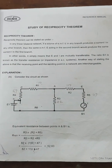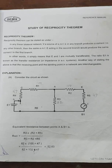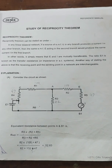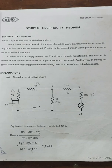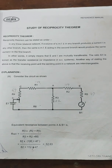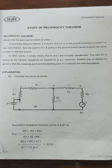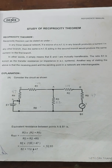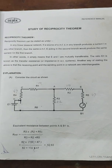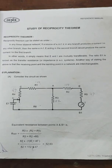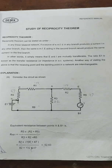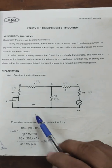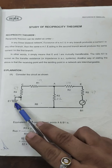As per the definition of the reciprocity theorem: in any linear bilateral network, if a source of EMF E in any branch produces a current I in any other branch, then the same EMF E acting in the second branch would produce the same current I in the first branch.